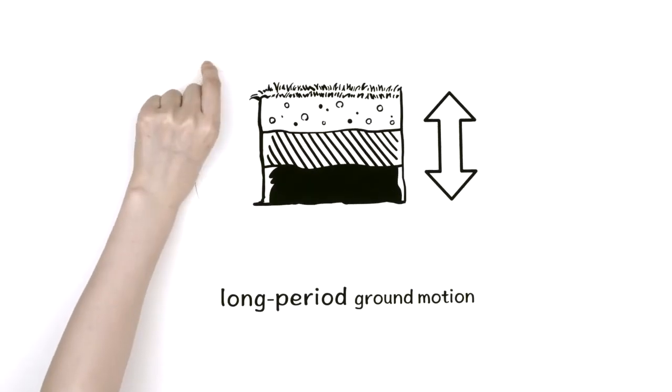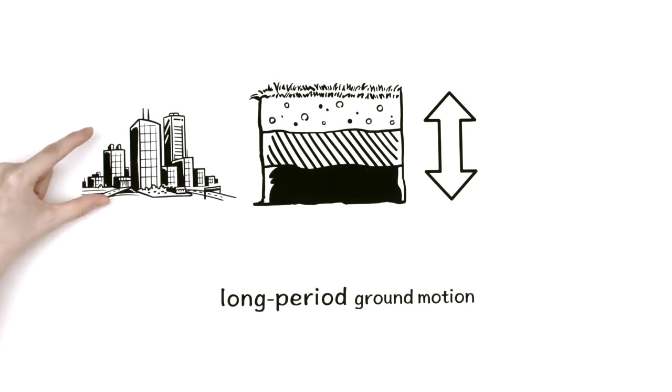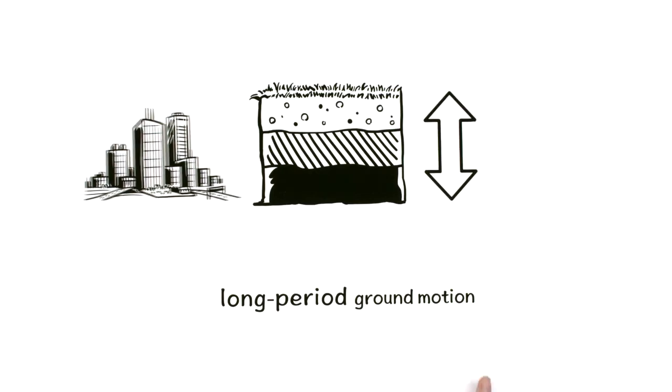The thicker the ground's sedimentary layers, the longer the period. Because cities are usually built on planes composed of very thick sedimentary layers, they often experience long period ground motion.